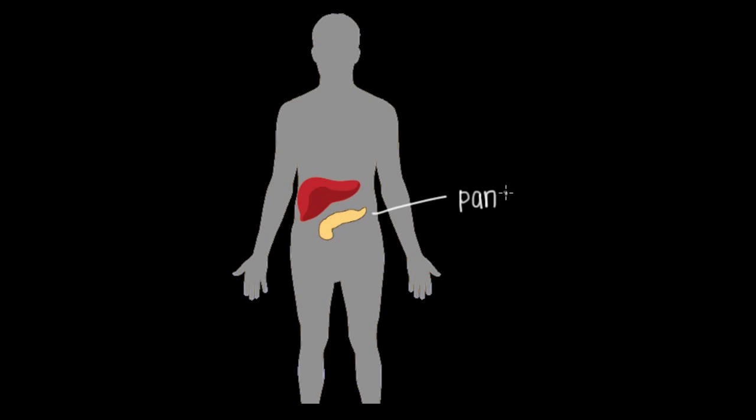Now the pancreas sits in the retroperitoneum, which relative to the liver, which sits in the peritoneum or in the abdomen, the pancreas is found to the back and to the left.